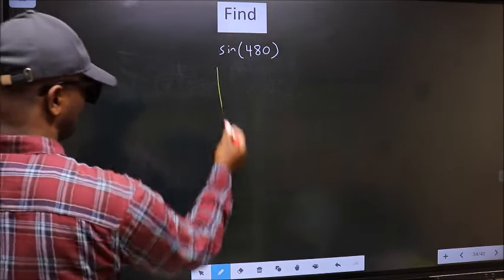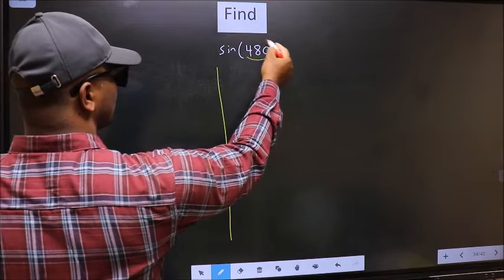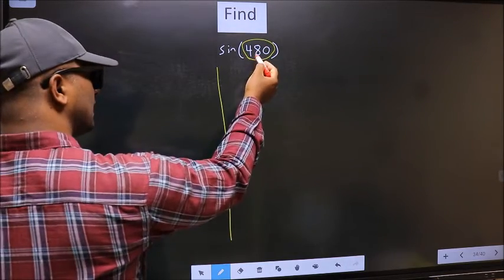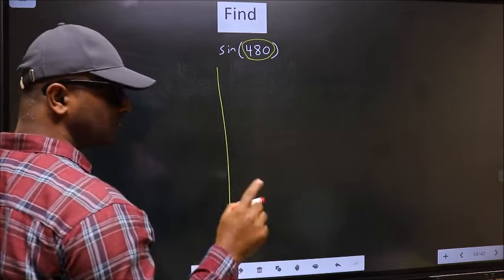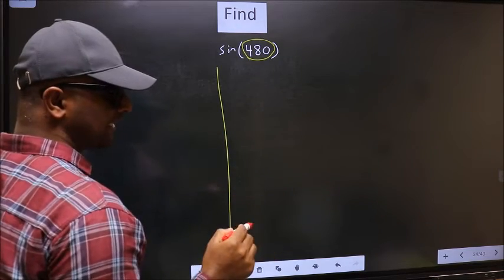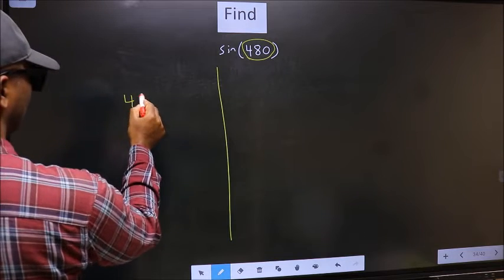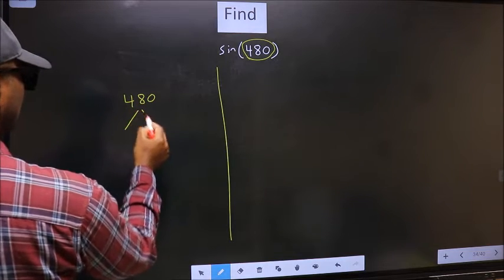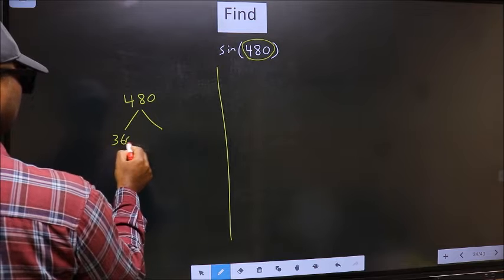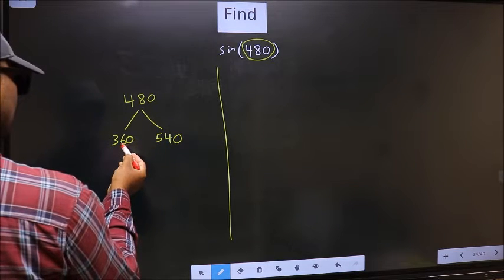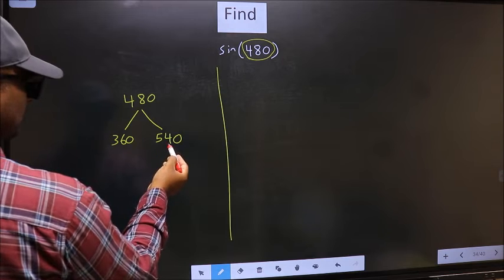here we have 480. Now you should check, 480 lies between which two multiples of 180. What I mean is, 480 lies between 360 and 540. This is 180 into 2 and this is 180 into 3.